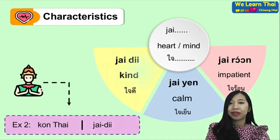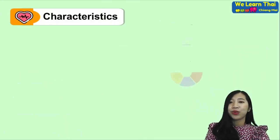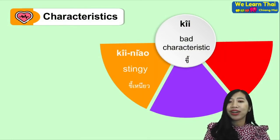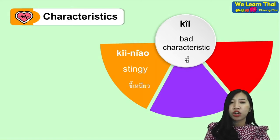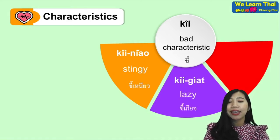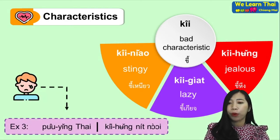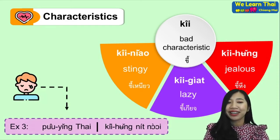And the last one, we have the word 'khi', which means a characteristic trait. We have 'khi neiau' — stingy, 'khi geet' — lazy, and 'khi heng' — jealous. For example: 'poo ying thai khi heng nit noi' — Thai women are a little bit jealous.